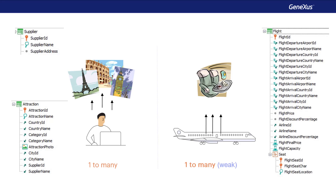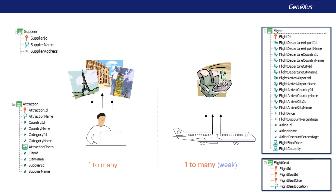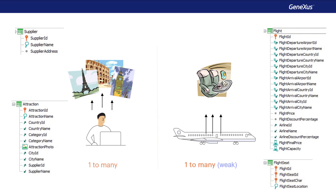The Weak 1-to-many relationship can also be represented with two transactions. It's exactly the same for data modeling purposes, where part of the primary key of the Seats transaction is the Flight ID attribute. More specifically, this attribute will be the Foreign Key of the Flight table.